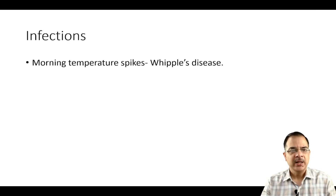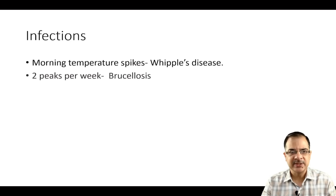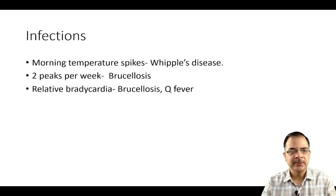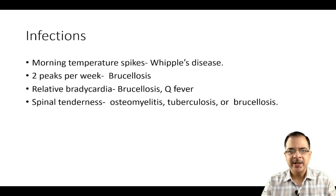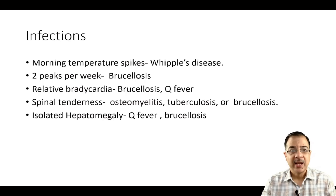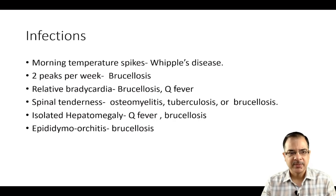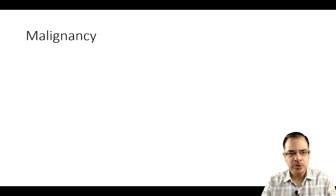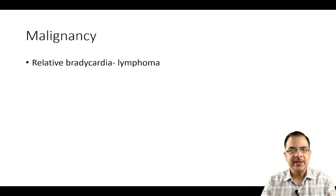For fever of unknown origin signs: morning temperature spike is highly suggestive of Still's disease (adult Still's disease). Two peaks of fever per week and relative bradycardia are seen in brucellosis — and relative bradycardia also in Q fever. Spinal tenderness points to osteomyelitis, tuberculosis, or brucellosis. Isolated hepatomegaly is seen in Q fever and brucellosis. Testicular involvement raises the possibility of brucellosis. In malignancy, relative bradycardia is seen in Hodgkin's lymphoma.